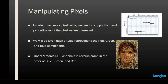When we fetch a pixel it will return a tuple which contains the three color values of that pixel — the three primary colors: red, green, and blue. In OpenCV the color values are saved in reverse order from what we normally think of. We normally think of RGB, that is red green blue, but in OpenCV it is saved as BGR — blue green and red.